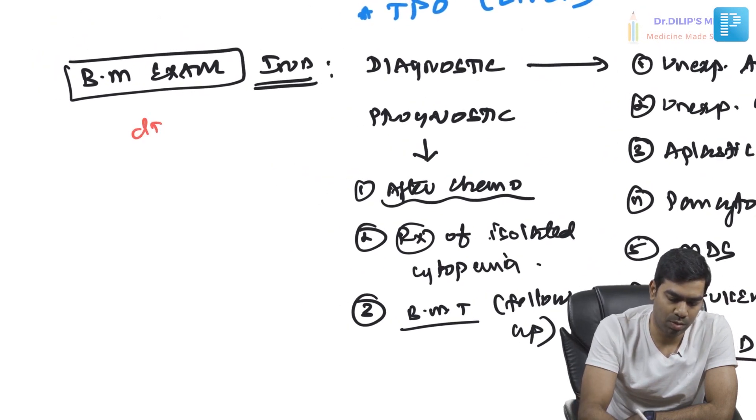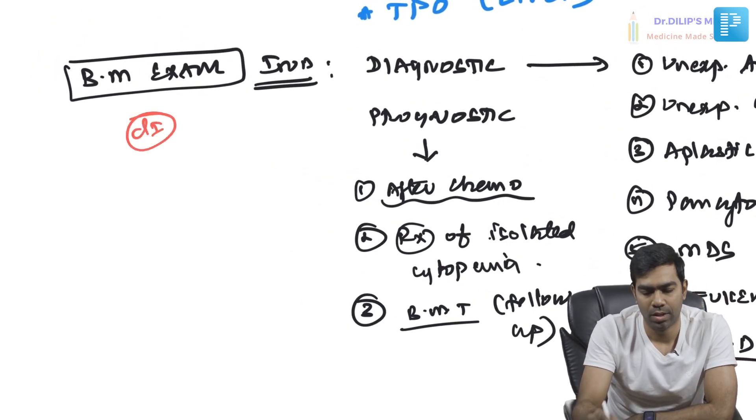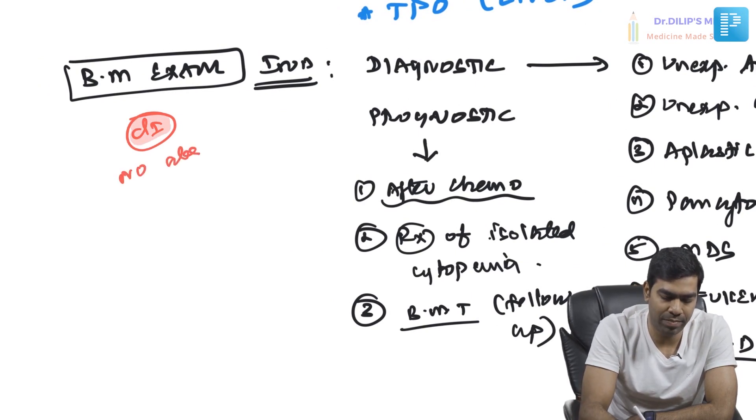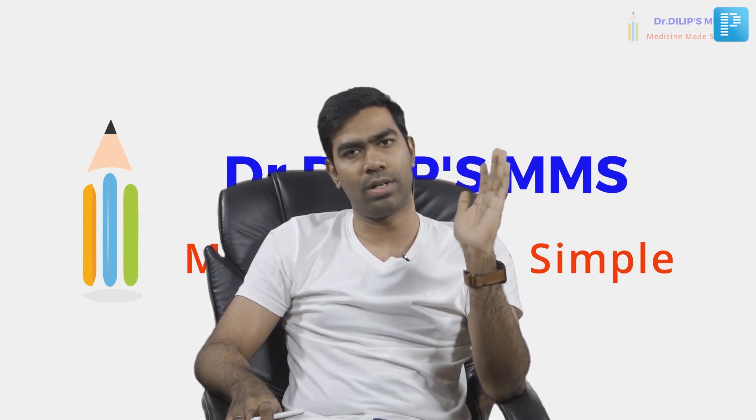If somebody asks about contraindications for bone marrow examination: there is no absolute contraindication for a bone marrow. There are many relative contraindications, but no single absolute contraindication. Even very severe thrombocytopenia — which has been asked in recent AIIMS exams — is not a contraindication for doing a bone marrow examination, because it actually becomes a relative indication for bone marrow examination when you have an unexplained thrombocytopenia.